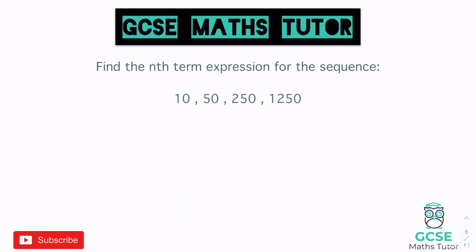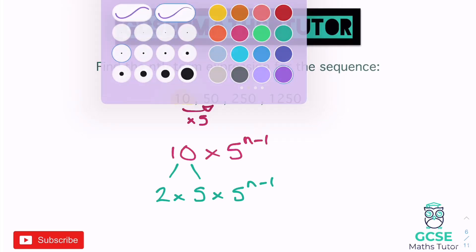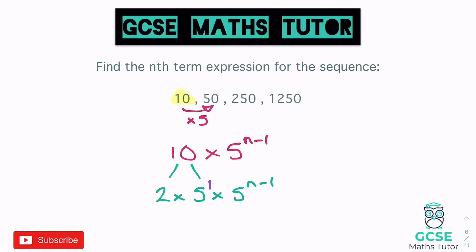Taking the same approach for the sequence starting with 10 and multiplying by 5, we get 10 times 5 to the power of n minus 1. Now 10 breaks down to 2 times 5, so we have 2 times 5 times 5 to the power of n minus 1. That middle 5 has a power of 1, and adding the powers — 1 and n minus 1 — the 1s cancel. So we're left with 2 times 5 to the power of n.